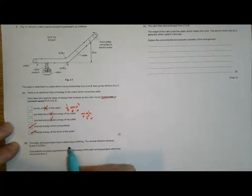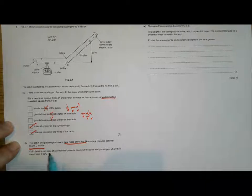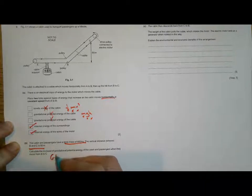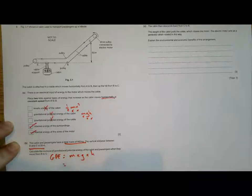Part B. The total mass of the cabin and passengers is 800 kilograms and the vertical distance between B and C is 50 meters. GPE is mass times gravitational field strength times height.